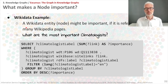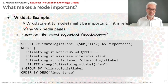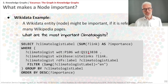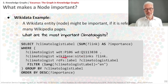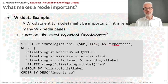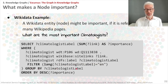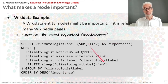In our SPARQL query, we select the climatologist label and the number of links to Wikipedia pages. The graph pattern checks that the person's occupation is climatologist, and we use the wikibase:sitelinks property — a special namespace — to retrieve links to Wikipedia pages. We sum the number of site links for each climatologist, call this sum 'importance', require the label in English, group by climatologist label, and order in descending order by importance.